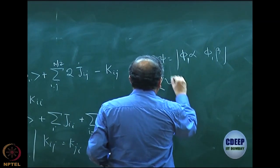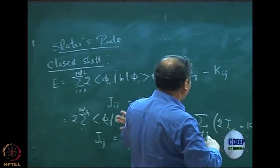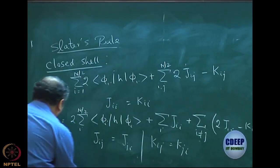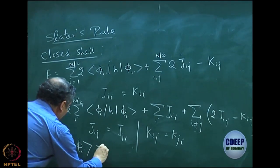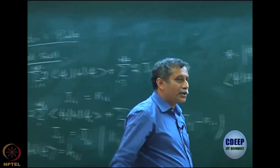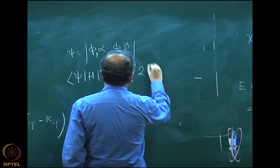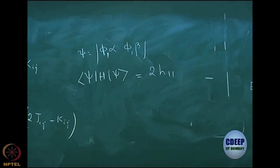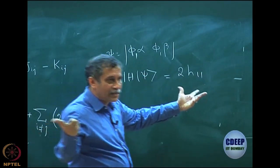Now I want to calculate the expectation value of the energy. Apply and do the spin integration directly — I have the form. To simplify, let me also call the matrix element phi_i H phi_i as H_ii. Then what is the result? The result is 2 times H_11, because phi_1 H phi_1 with 2 electrons becomes 2 times H_11. There is no further summation because there is only 1 spatial orbital.